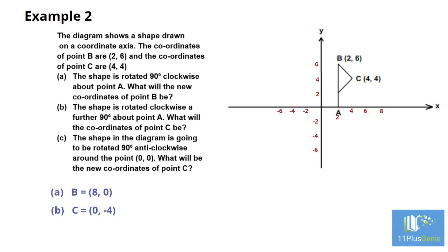Part C: The shape is to be rotated 90 degrees anticlockwise about the point (0, 0). Draw your arrow from the point (0, 0) to point C. Rotate the arrow through 90 degrees anticlockwise. The new position of point C will have the coordinates (-4, 4).